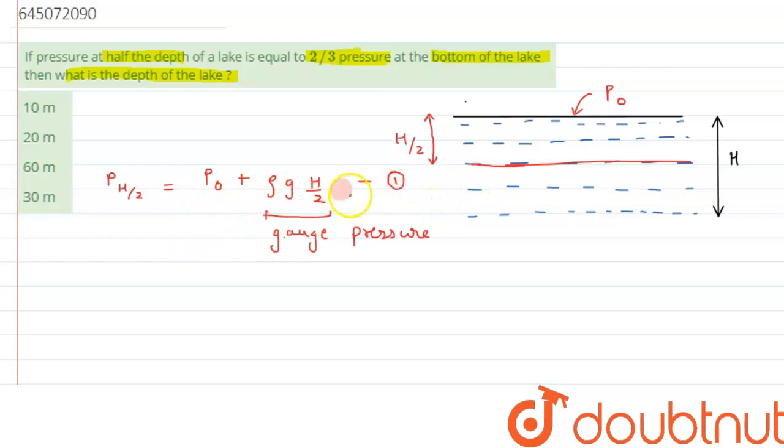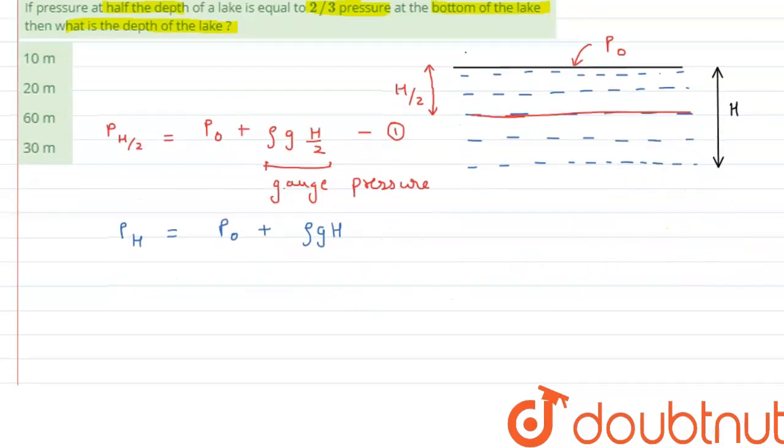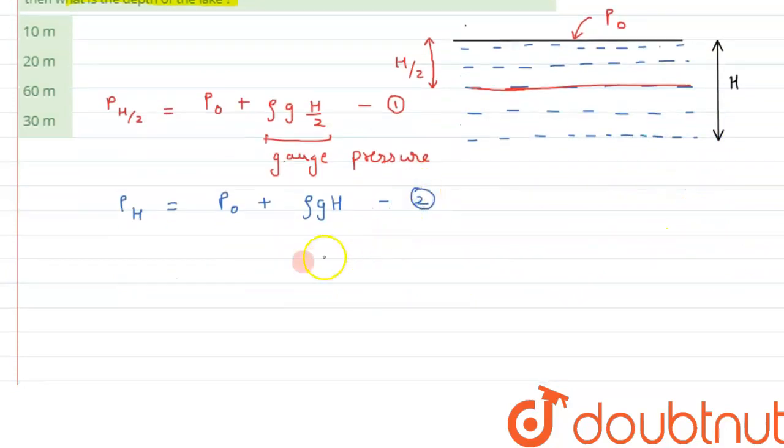Let's say this is our equation number 2. We have been given the condition that pressure at half the depth is equal to 2/3 the pressure at the bottom. So this is the condition.